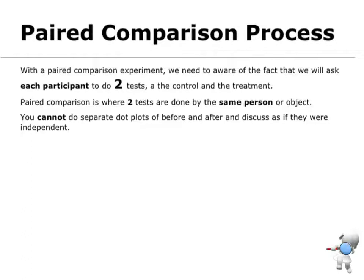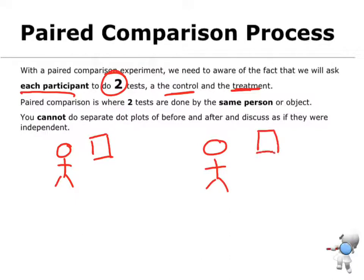In a paired experiment, we need to be aware that every participant is going to do two tests, which is our control and the treatment. For example, I might have a student and I'm going to give them a test before we begin the topic, and then that same student is going to get a test at the end of the topic.